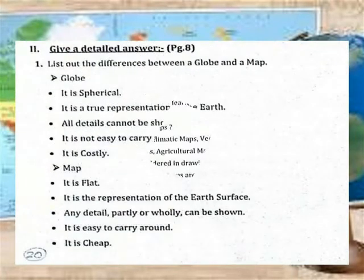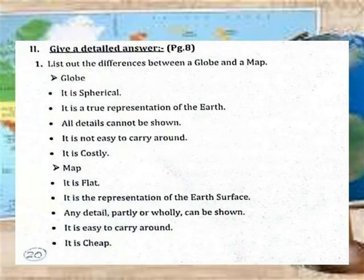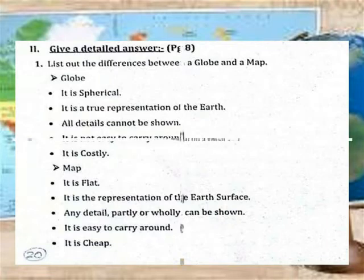Difference between a globe and a map. Globe: it is spherical, it is a true representation of the Earth, all details cannot be shown, it is not easy to carry around, and it is costly. Map: it is flat, it is a representation of the Earth's surface, any detail partly or fully can be shown, it is easy to carry around, and it is cheap.